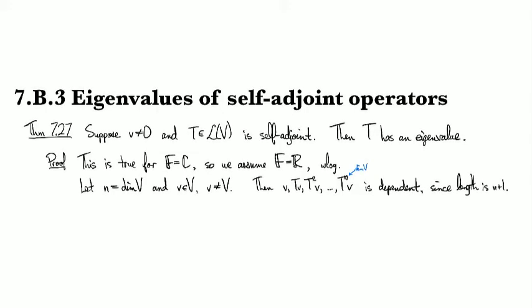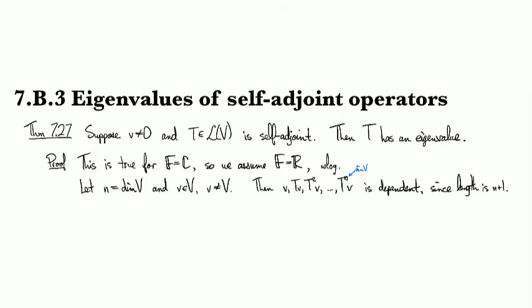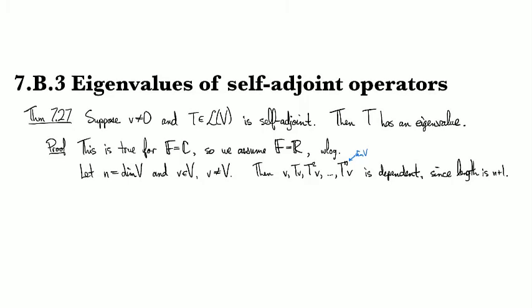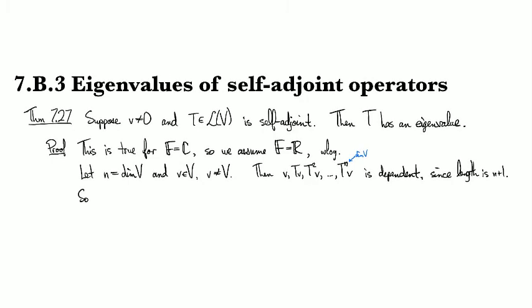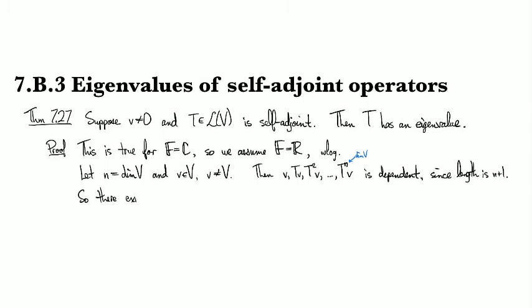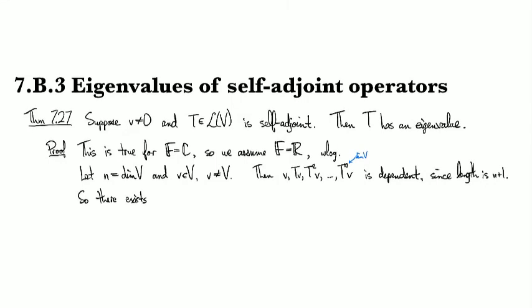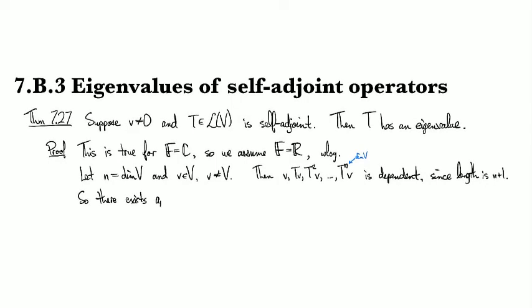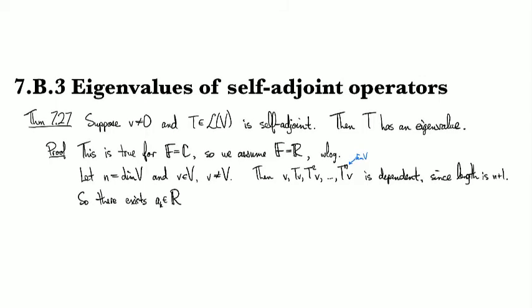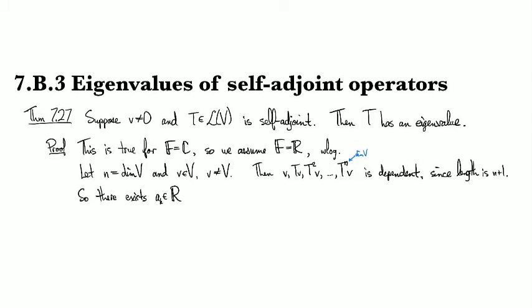We've got a 0th, 1st, 2nd, 3rd, 4th, 5th, and nth term, so there's n plus 1 things in that list. So then that means that there exists some scalars, let's call them a_k, and these are going to be real scalars because remember we're working with the reals right now.